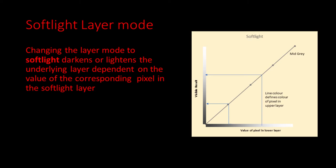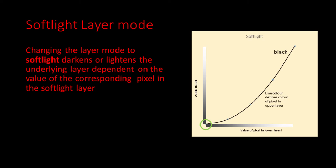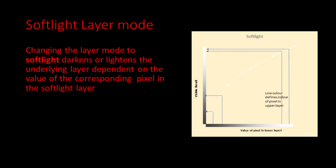Now let's consider what happens if the upper layer pixel is black. If the lower layer pixel is black, the resultant pixel remains black, and the same applies if the lower layer is white — the result is also white. But in between, the result is always darker than the underlying layer, and dark colours are darkened more than lighter colours. We see the opposite effect when the upper layer is white: the colour of the lower layer is brightened, but the effect is still larger for pixels that are darker in the lower layer.